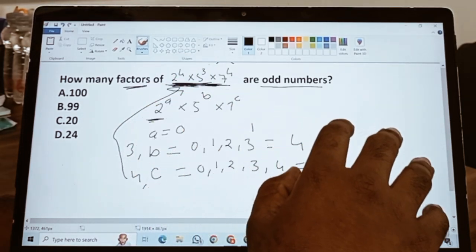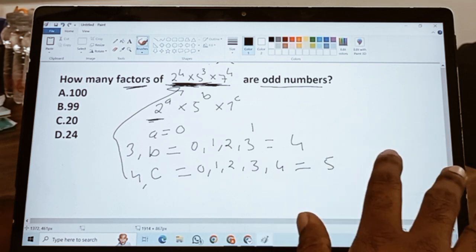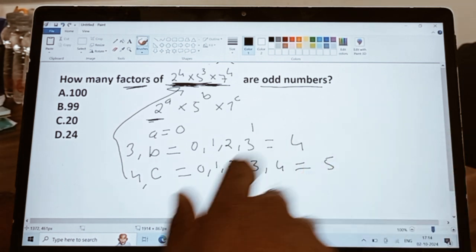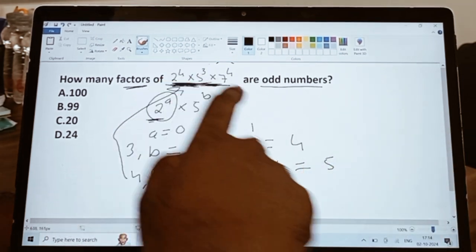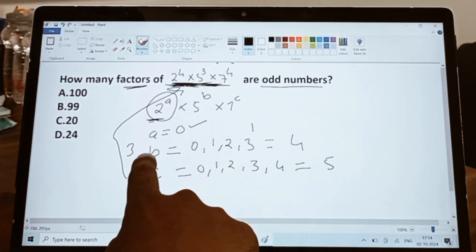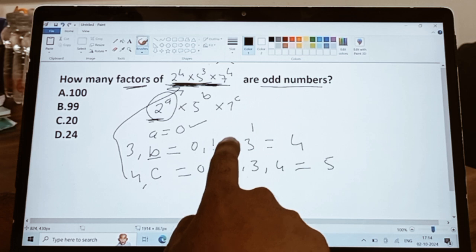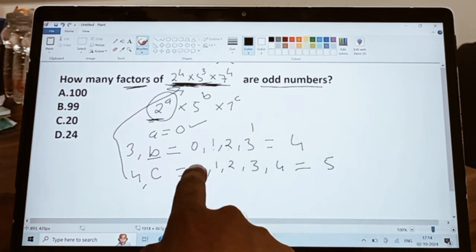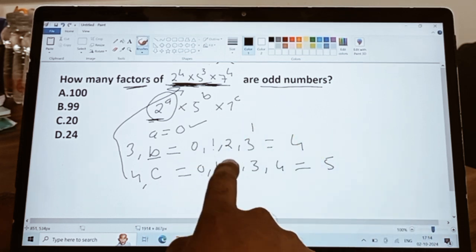Now again I am repeating: these terms a, b, and c must be in the form of odd digits, otherwise you will be getting an even number. That's why we have considered a equal to 0. Therefore 'a' can take only one value, that is 0. In case of b, there are four possible values, and for c, there are five possible values that c can take to make that entire number an odd number.